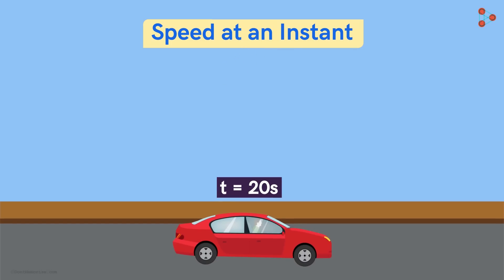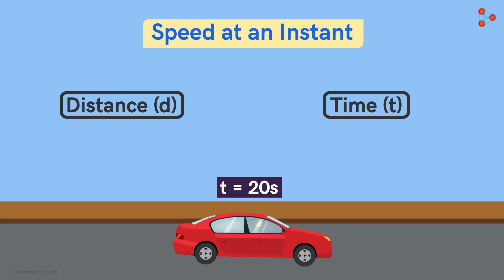Think about what information we need to find the speed at an instant. We should know the distance travelled by the car in various time intervals very close to this instant. Let's say we knew that this distance and time followed a nice relationship like this one.